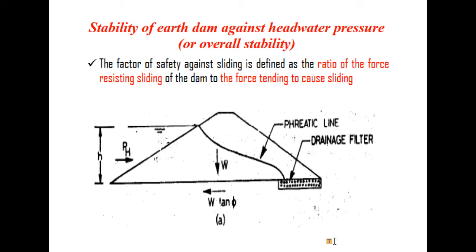The factor of safety against sliding is defined as the ratio of forces resisting sliding of the dam to the force tending to cause sliding. Therefore, the factor of safety against sliding is defined as the ratio of forces resisting sliding divided by the force tending to or actuating sliding.